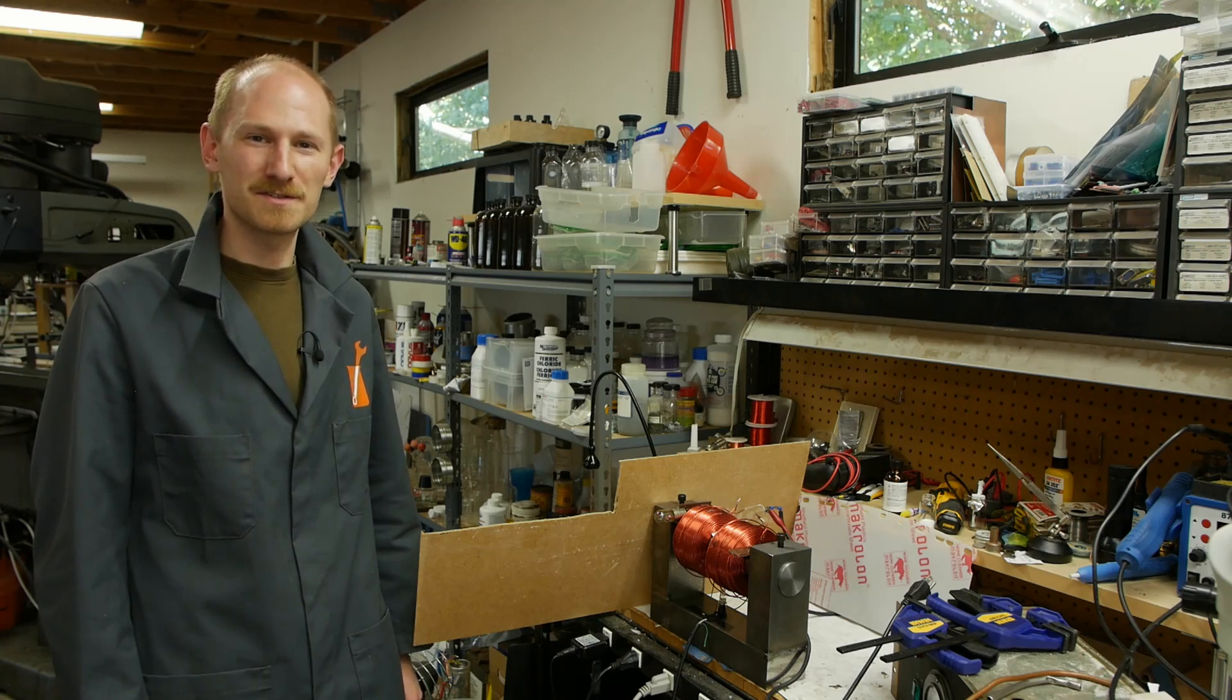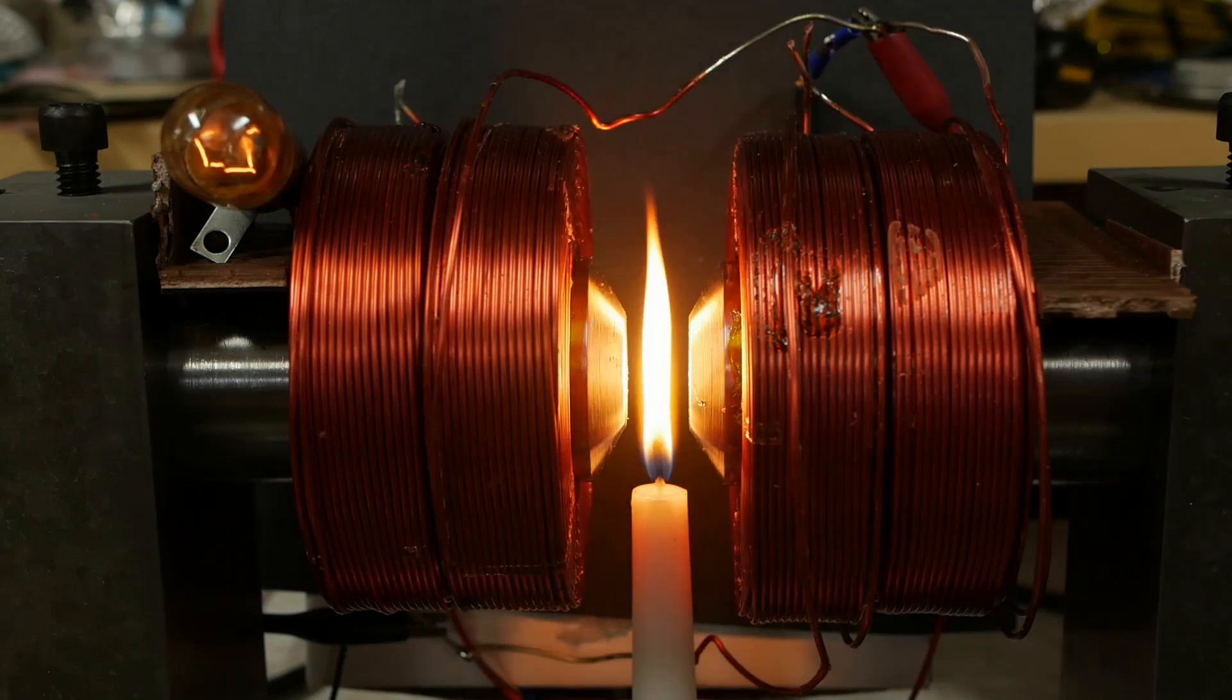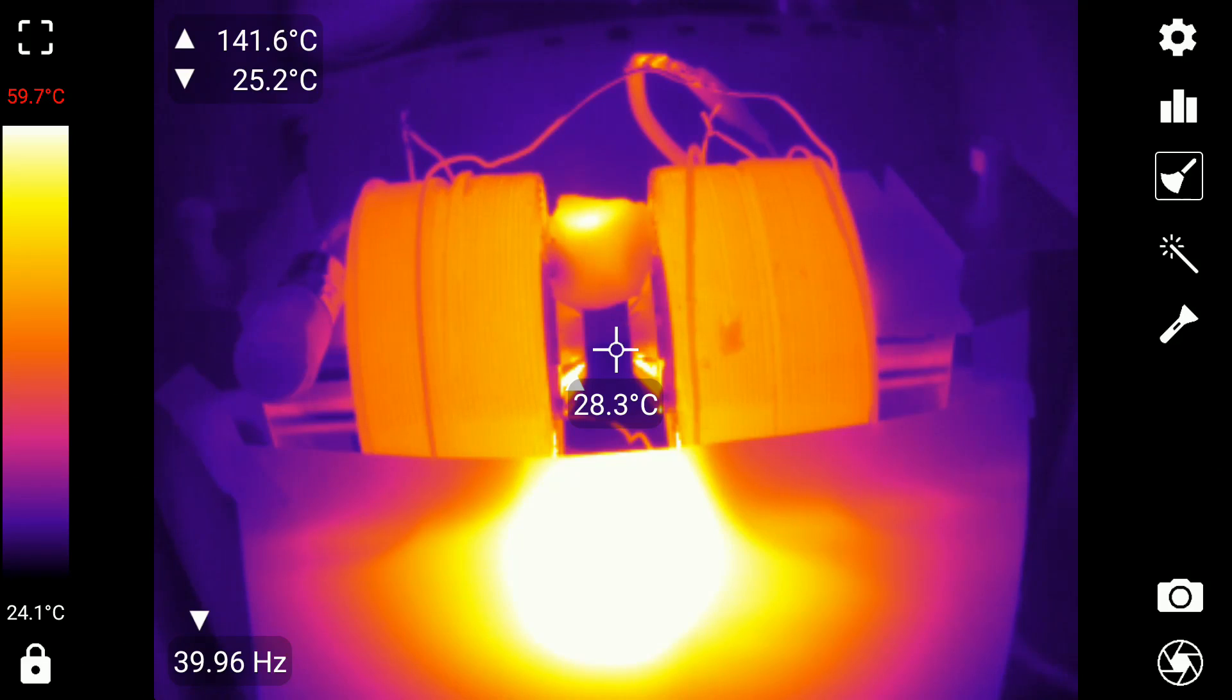Today on Applied Science, we're going to take a tour of some unusual magnetic effects, starting with this candle flame that's deflected by a magnetic field and ending with a hot air stream that's also deflected by a magnetic field.